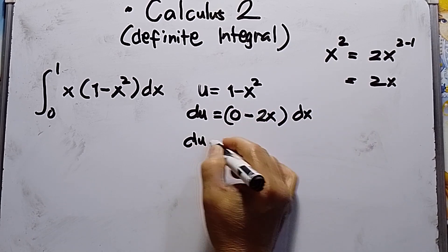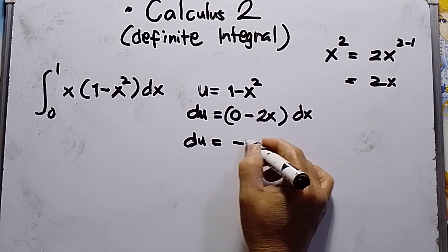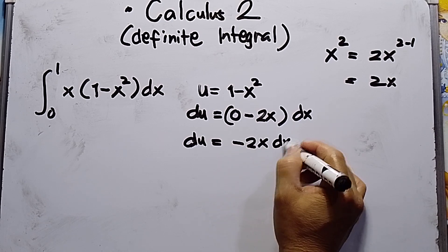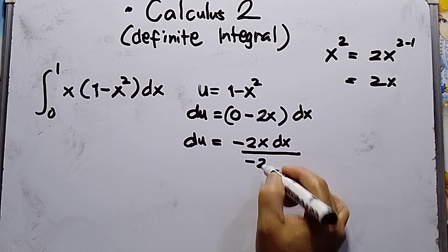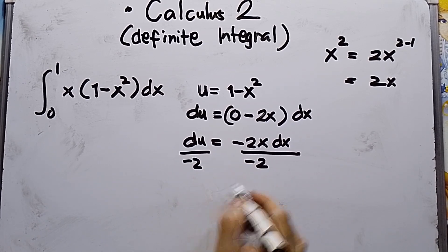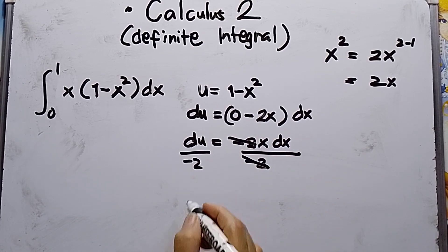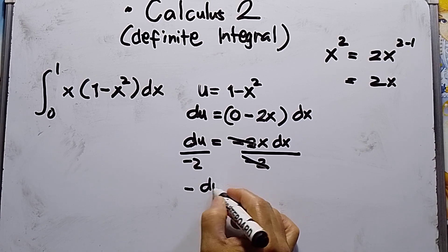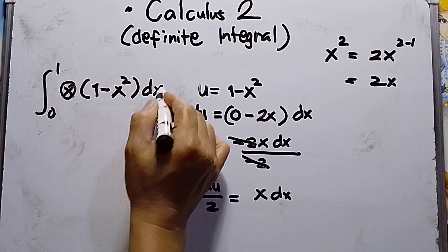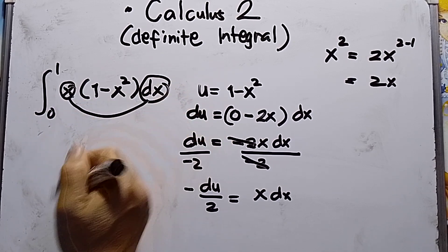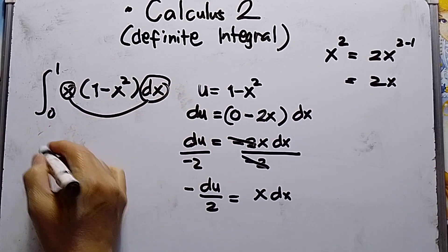So du equals negative 2x dx. We need to divide negative 2 both sides, so negative 2 crosses out. I have now negative du over 2 equals x dx. So this x dx is negative du over 2.